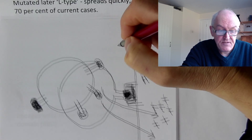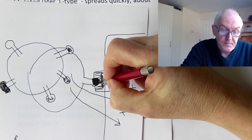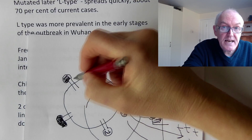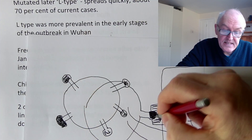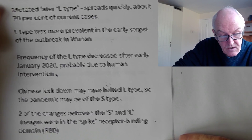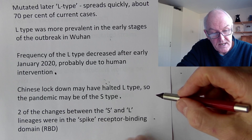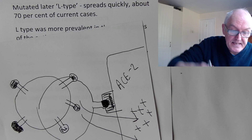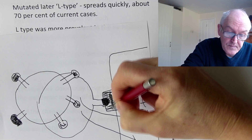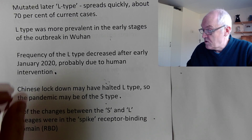It looks like the S form has a protein spike that is less able to adsorb onto the ACE2 receptor, so the disease process is slower. Whereas the L form - this later mutated, more virulent form - can fit into that receptor more efficiently. The Chinese lockdown may have halted the L type. The two changes between the S and L type relate to this spike receptor binding domain - the part that fits into your ACE2 receptor to allow the virus to enter.